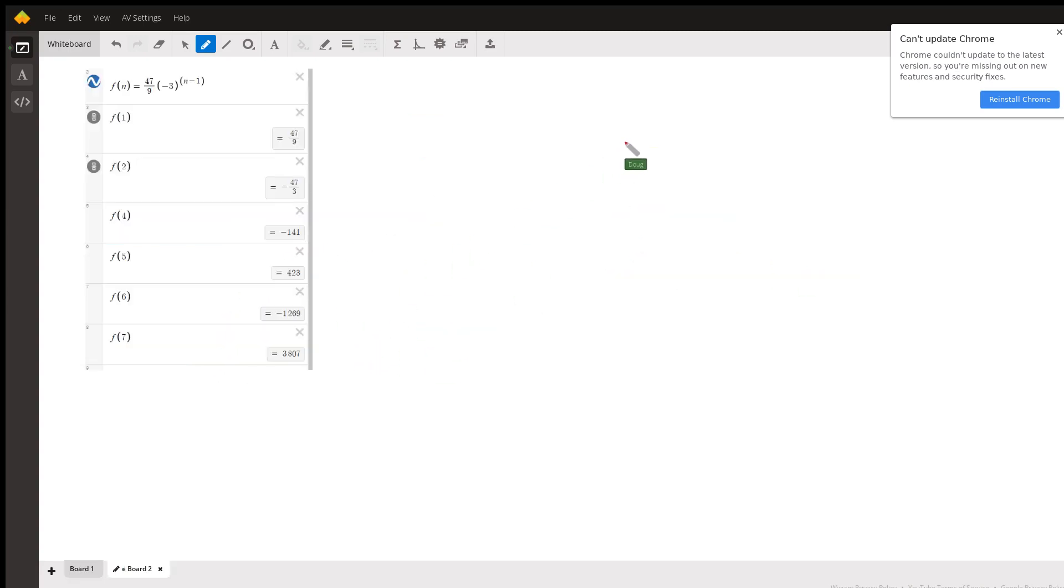And here's how you could set this up on Desmos once you know what r is. F of n: first term is 47 ninths times negative 3 to the n minus 1. So there's the first seven terms of this geometric sequence.